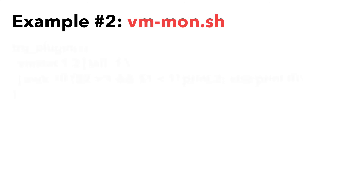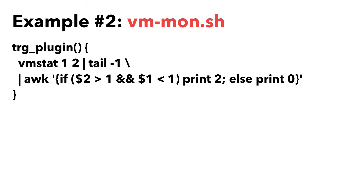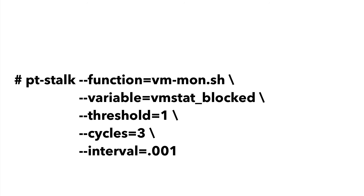Another example is the blocked IO monitor, which uses vmstat to monitor for blocked IO activity. It's not really the best way to do it, as there's an extra delay of 1 second from vmstat itself, but to compensate for that, I decrease the pt-stalk interval. These two plugins are only practical in very specific situations though. In most cases, monitoring threads running is your best bet.